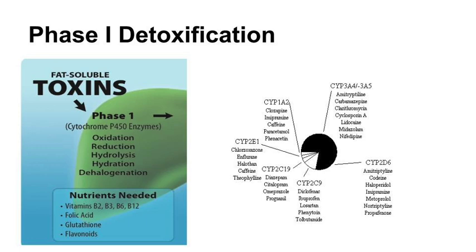The purpose of Phase I metabolic detoxification is to convert toxins into a water-soluble form, preparing them for Phase II. This is accomplished mainly by a class of slow-acting nonspecific enzymes known as cytochrome P450s or CYPs. CYPs typically aid in the metabolism of prescription drugs and endogenous toxins.